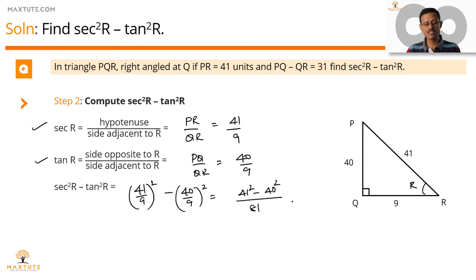This is of the form A square minus B square, which will be A plus B into A minus B. So this is equal to 41 plus 40, which is A plus B. A minus B is 41 minus 40 divided by 81. 41 minus 40 is 1.